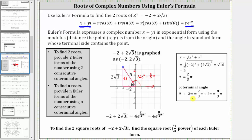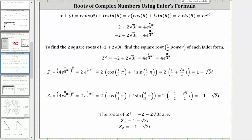Now we have the information needed to write two exponential forms for the complex number negative two plus two square root three i. We substitute four for r with theta equals two-thirds pi radians, as well as theta equals eight-thirds pi radians. To find the two square roots or two complex solutions, we need the one-half power of these two exponential forms. We will call the two roots z sub one and z sub two.